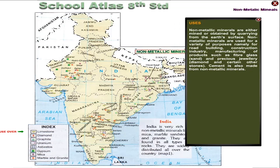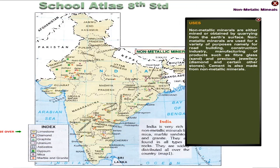Uses. Non-metallic minerals are either mined or obtained by quarrying from the earth's surface. Non-metallic minerals are used for a variety of purposes, namely for road building, the construction industry, manufacturing of products such as fiberglass, sand and precious jewelry, diamond and certain other stones. Cement is also made from non-metallic minerals.